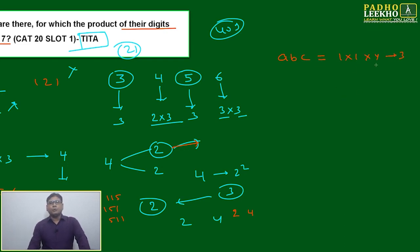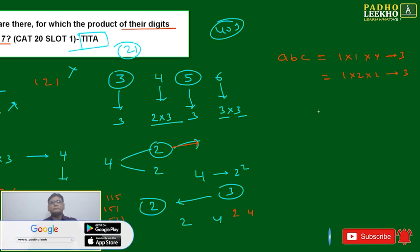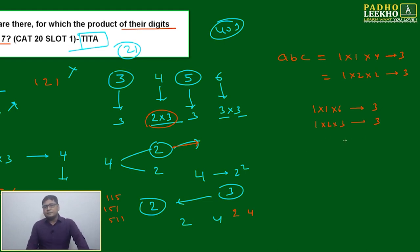If product is 6, then similar way you can write 1×1×6, this is again 3 ways. 1×2×3, this is again 3 ways, and one more option we'll get that is again 3 ways. Means we can say here 3×3, here 2×3, here only 3, here only 3. Total will come 21.